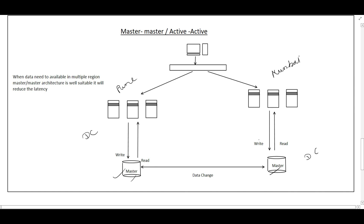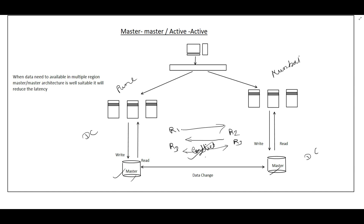If a write request changes row R1, that change is replicated from one master to the other. Similarly, a write to R2 from Mumbai is replicated to Pune. However, if both sites try to change the same row (row R3) simultaneously, there will be a write conflict. To resolve this conflict, we need to use a conflict-resolution algorithm — this is a large topic in itself that we will discuss later.